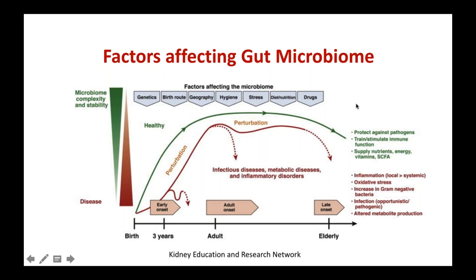A number of factors affect the gut microbiome. They could be linked to genetics or birth route — if a baby is born through cesarean section, the baby misses out on the contribution of the birth canal. Geography has an important bearing on microbial diversity: living in Norway will be very different in deciding what kind of microbes are present in the gut compared to living in India or in Africa. To some extent it is also affected by hygiene, stress, diet, nutrition, and use of drugs — especially antibiotics, anti-cancer drugs — all of which will have their impact on the microbiome.